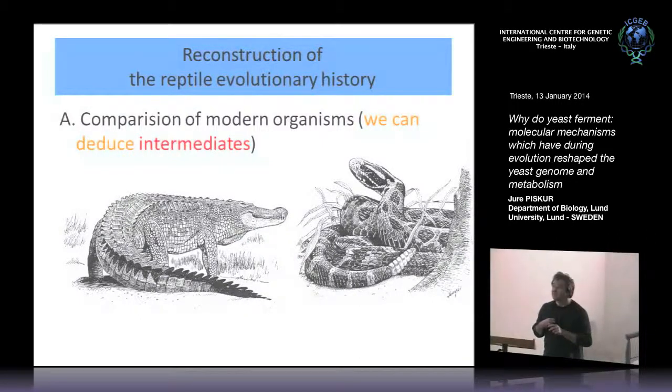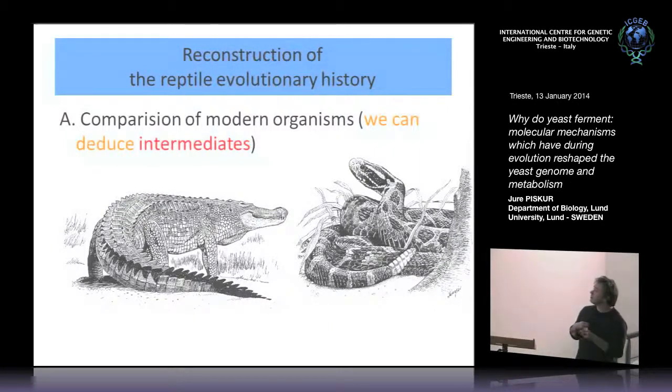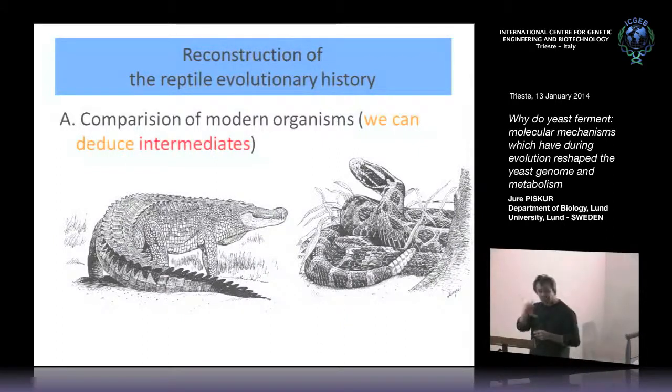When we reconstruct the reptile evolutionary history one approach is comparing modern organisms. We have two modern reptiles and if you compare them you can see how the legs were changing during history, and you can also reconstruct the common progenitor. On the basis of these you can see how things developed. Modern organisms we compare on the macro level or molecular level and then we can get an intermediate.